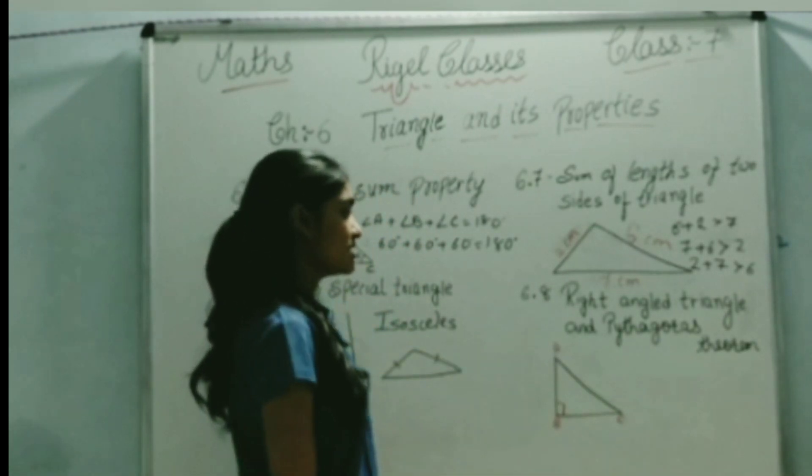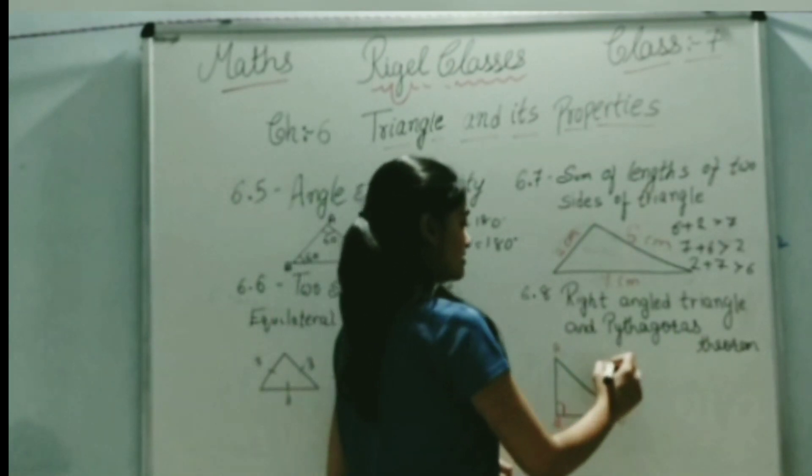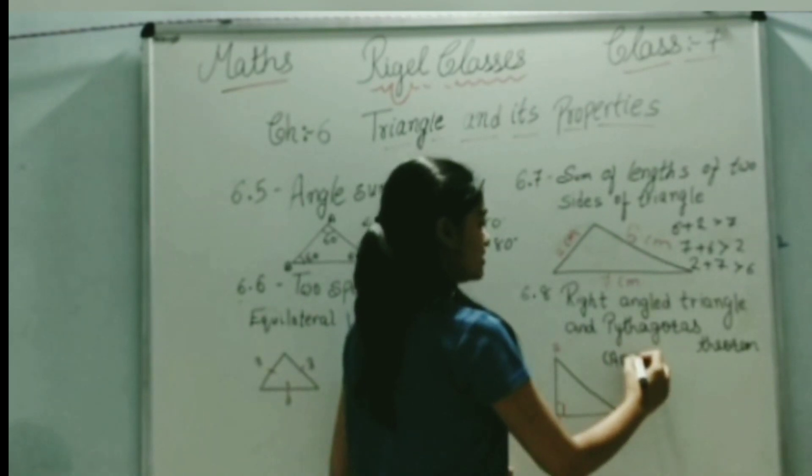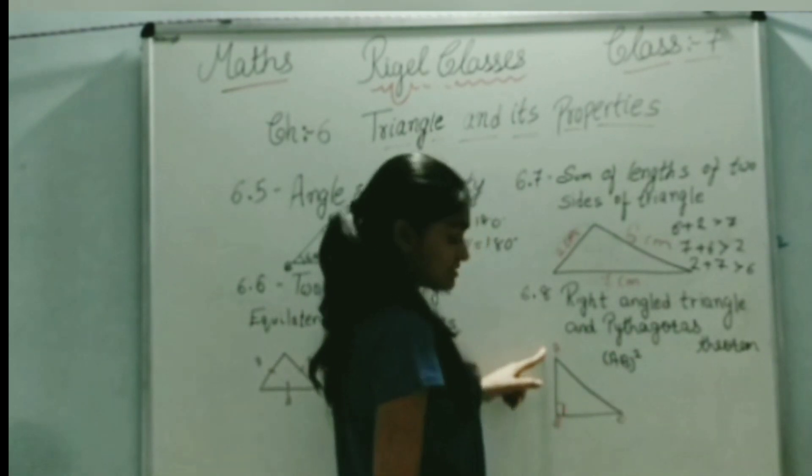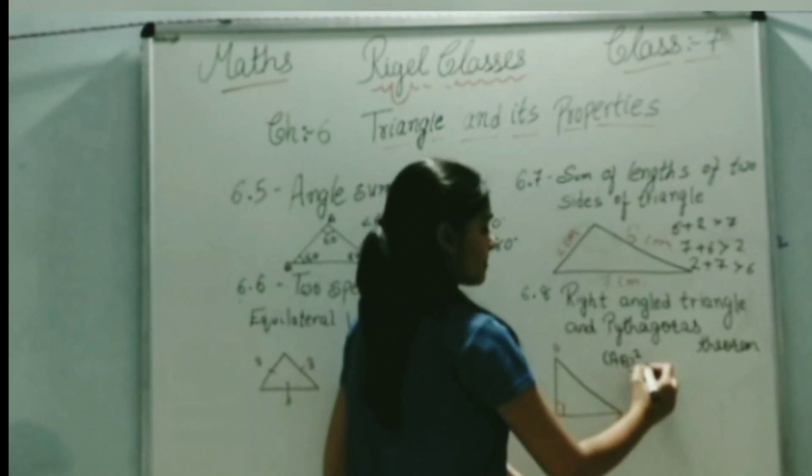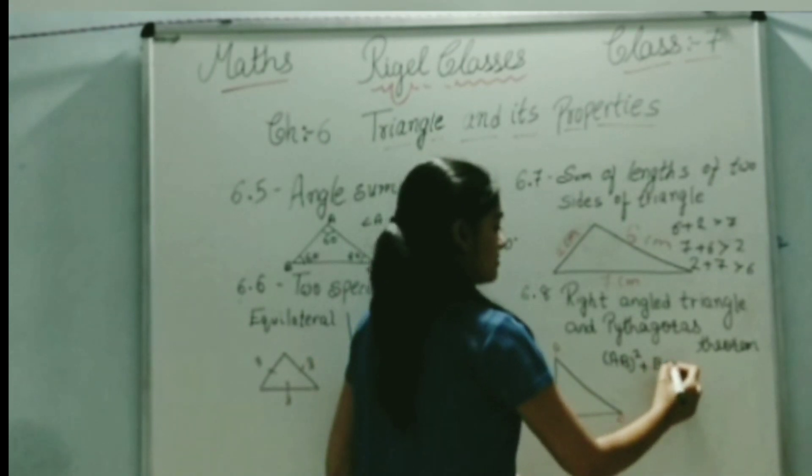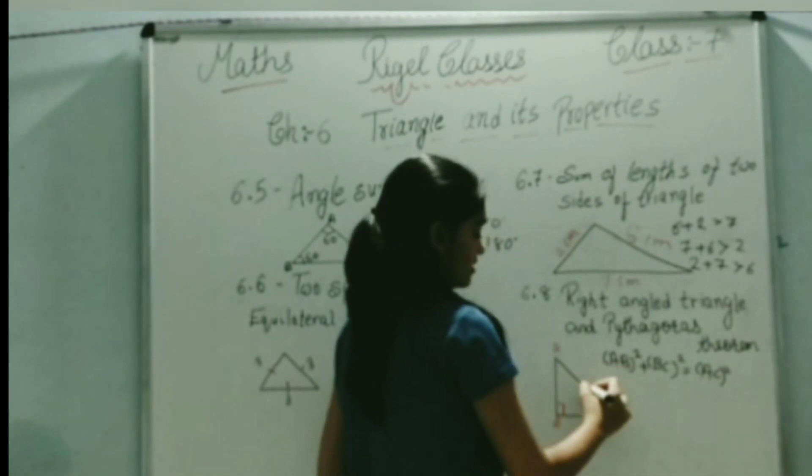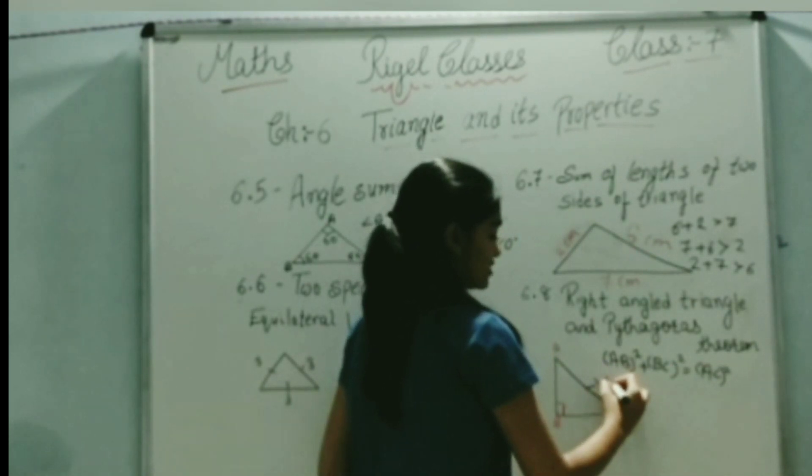And then Pythagoras theorem. Pythagoras theorem says that the sum of squares of two sides is equal to the square of the third side. That is, AB squared plus BC squared gives us AC squared. Here AC is called the hypotenuse.